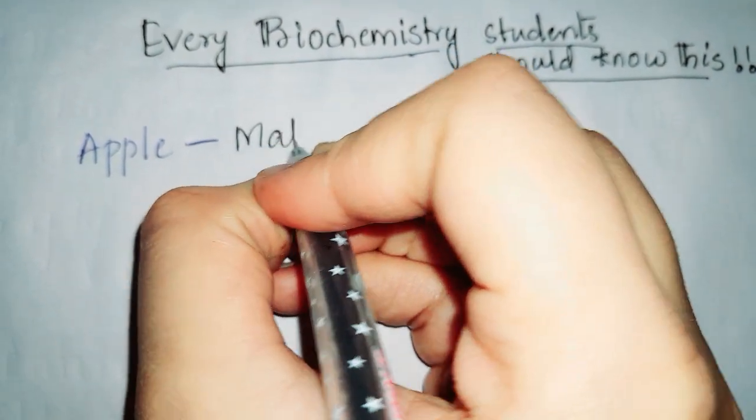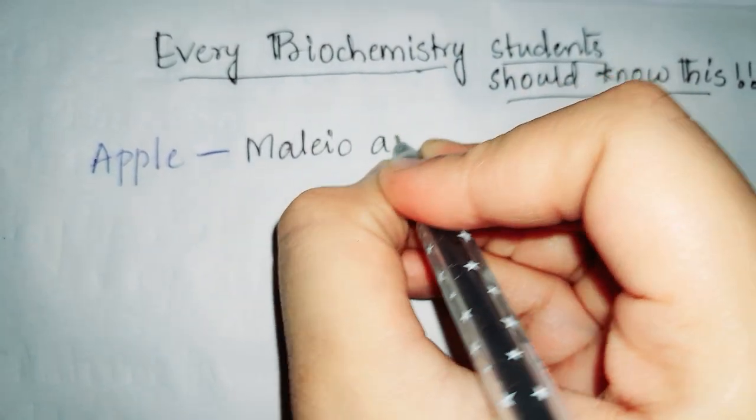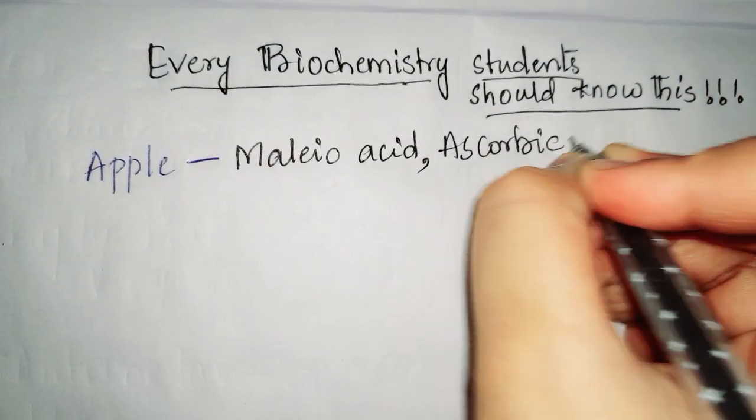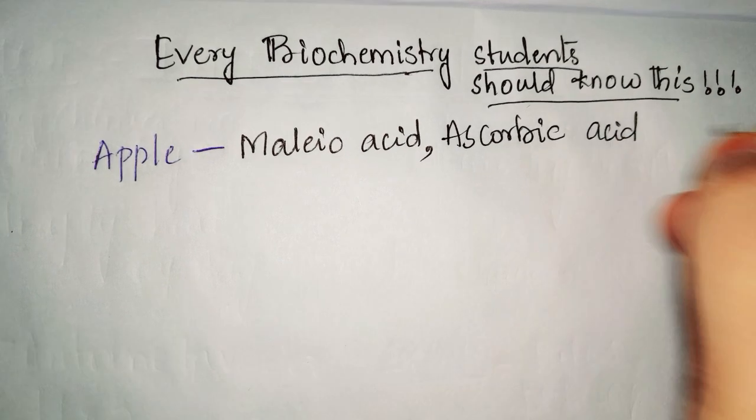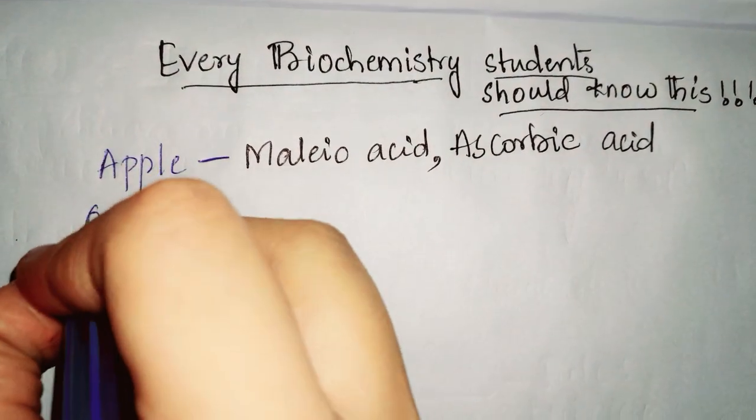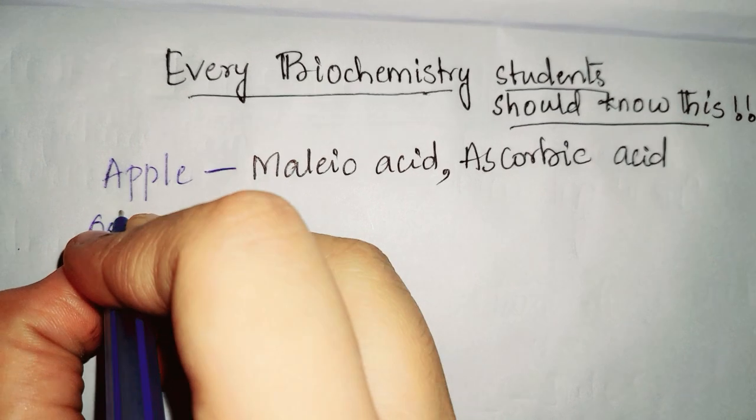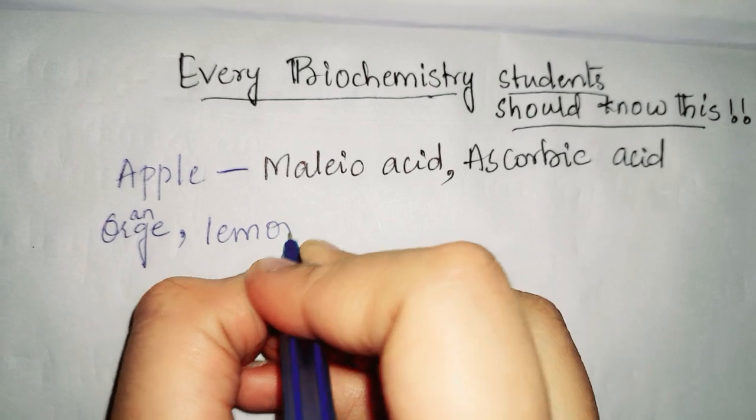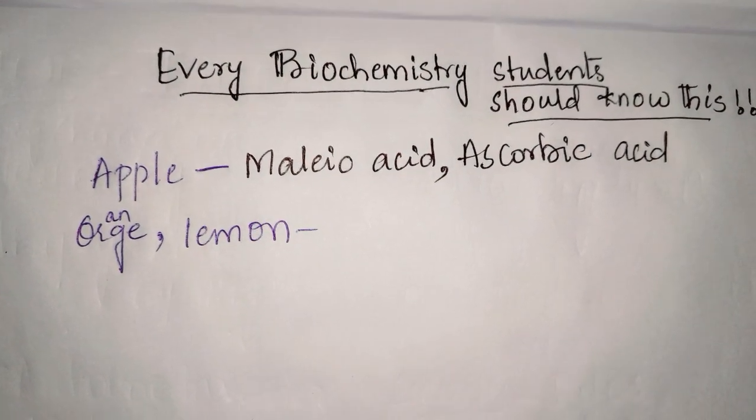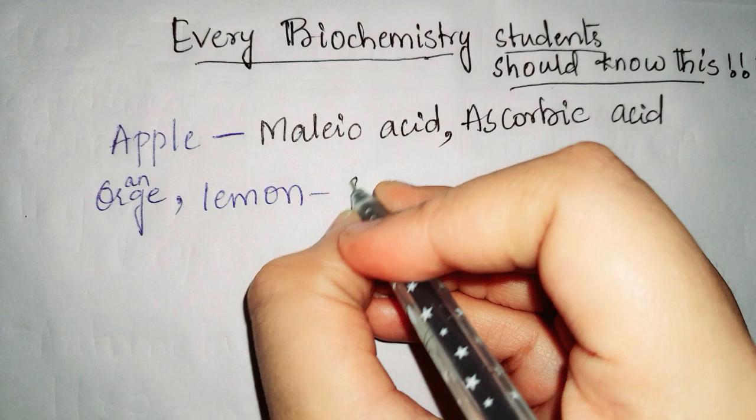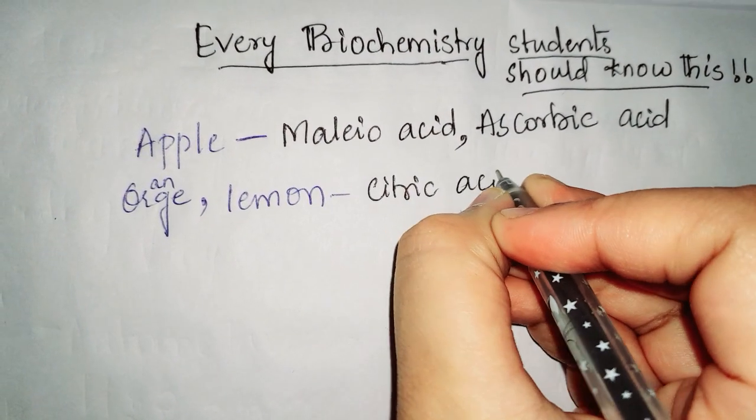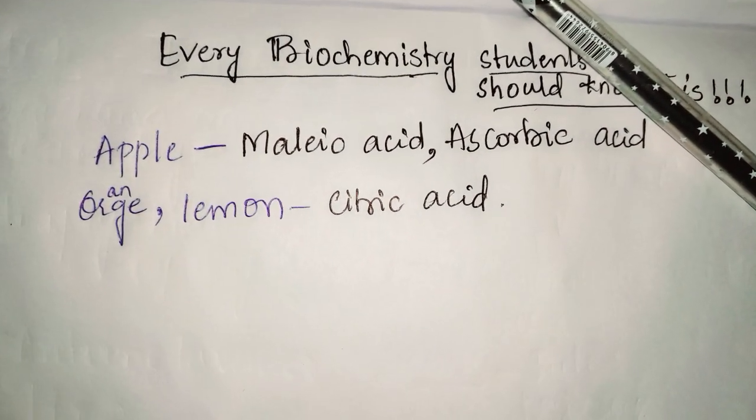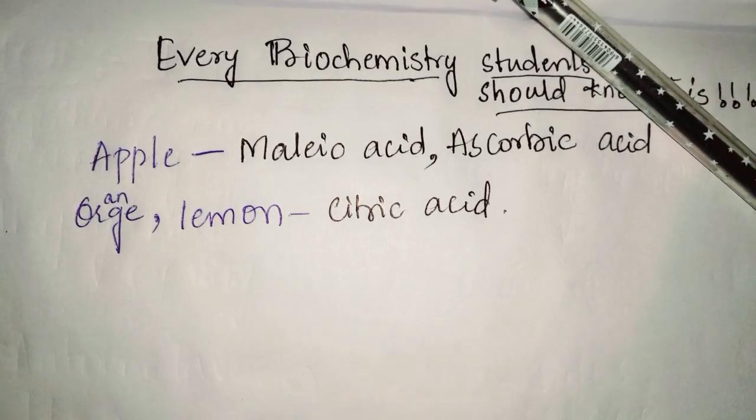If we talk about orange and lemon, both contain the same acid - that is citric acid, which is very essential for our body to clear up our skin. And if we talk about onion and spinach, these two contain the same acid.